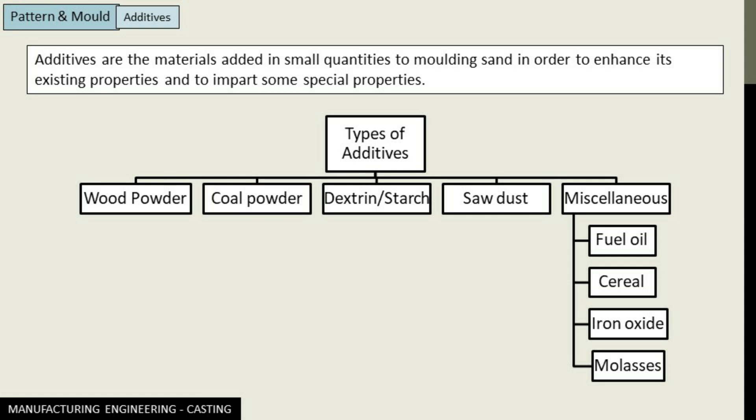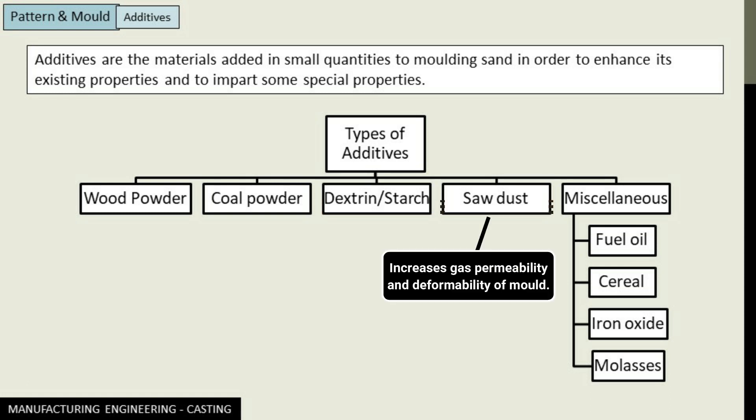Next we have dextrin, or what we call starch. This additive is used to improve the strength of the molding sand, just like coal powder. Sawdust increases the gas permeability and deformability of molds and cores.